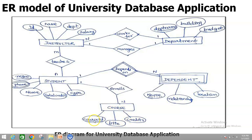Now we'll go for the mapping of relationships between each entity. The relationship between instructor and student is 'teaches' — faculty is going to teach the student. The relation between instructor and department includes 'works for' and 'manages' — a faculty works for the department and also manages the department. As mentioned, two entities can have multiple relationships. The relation between student and dependent is represented with a double diamond because it is a relation involving a weak entity. The relationship between student and course is 'enrolls' — a student enrolls for courses.